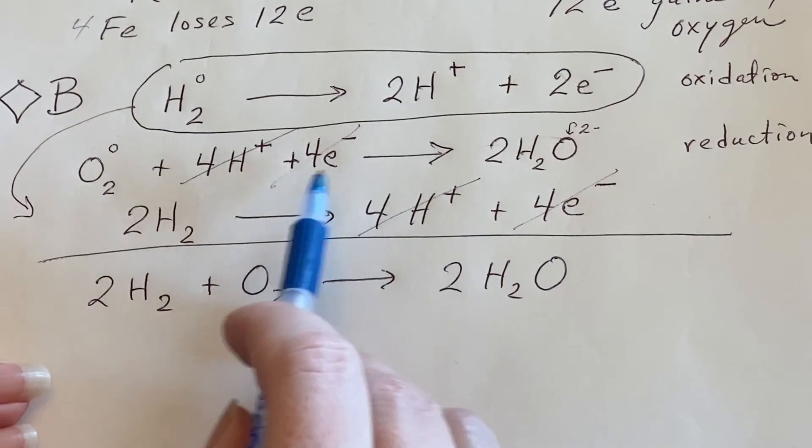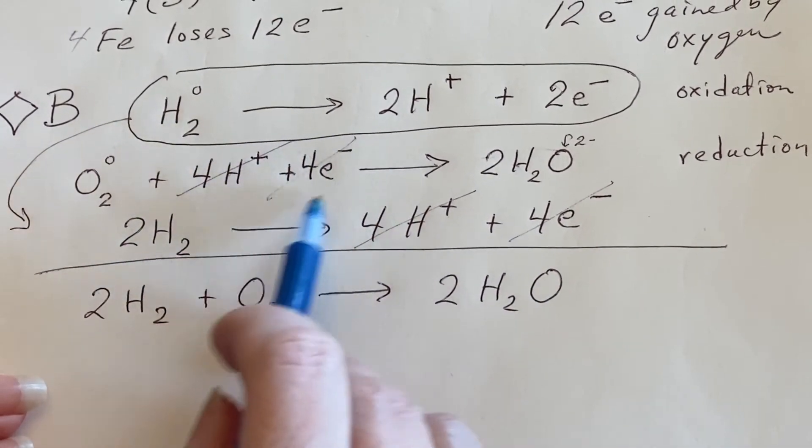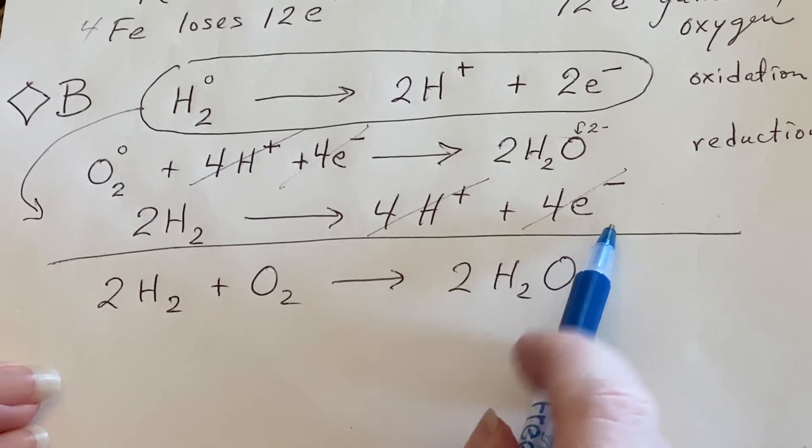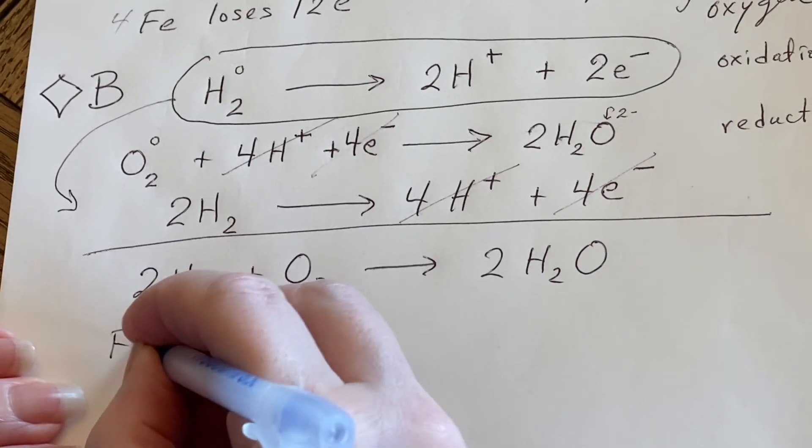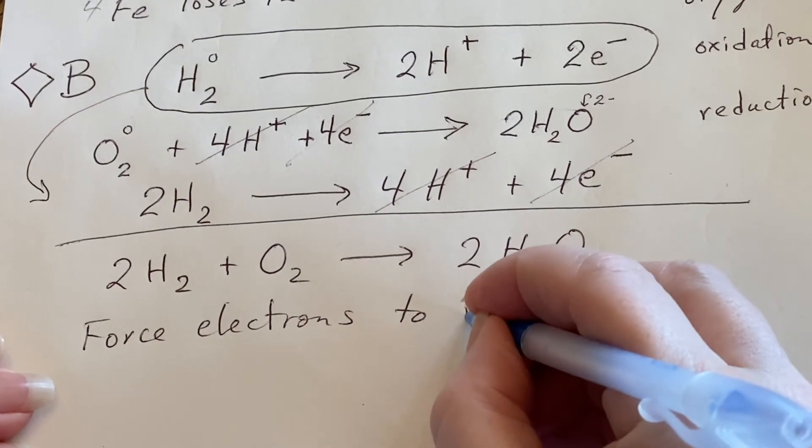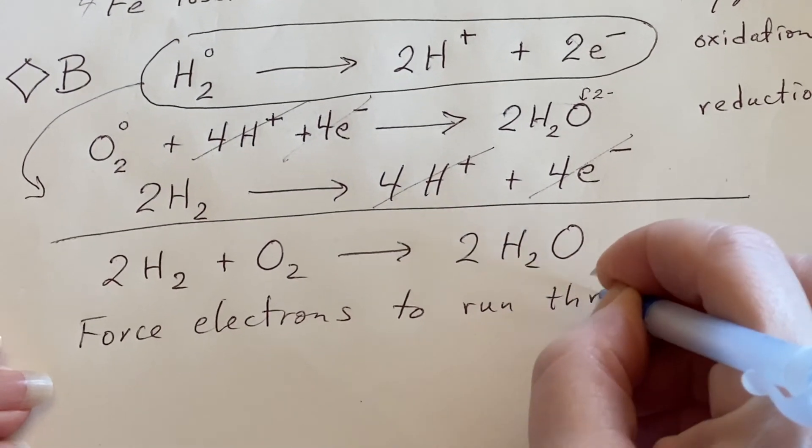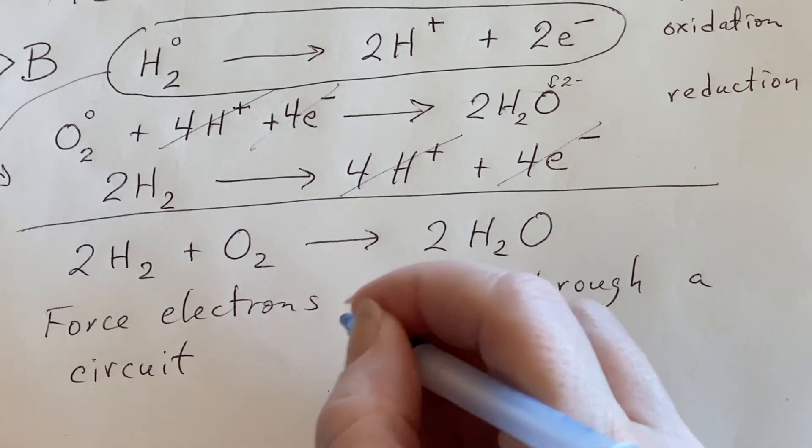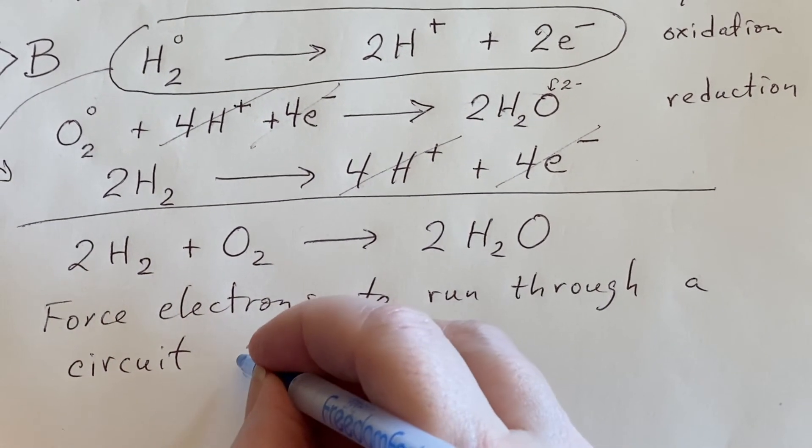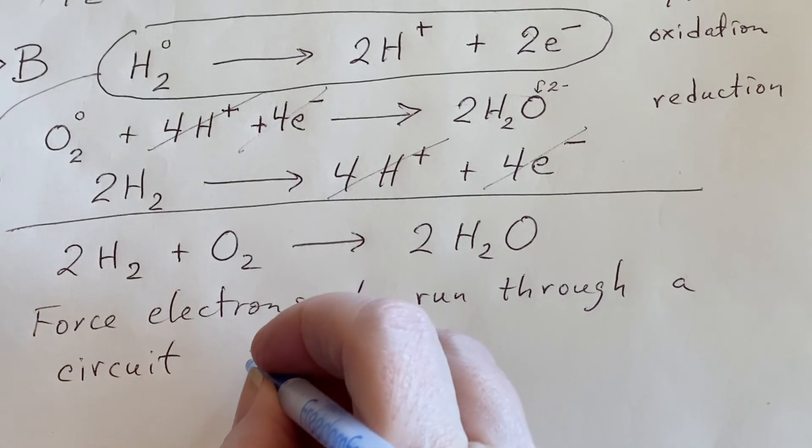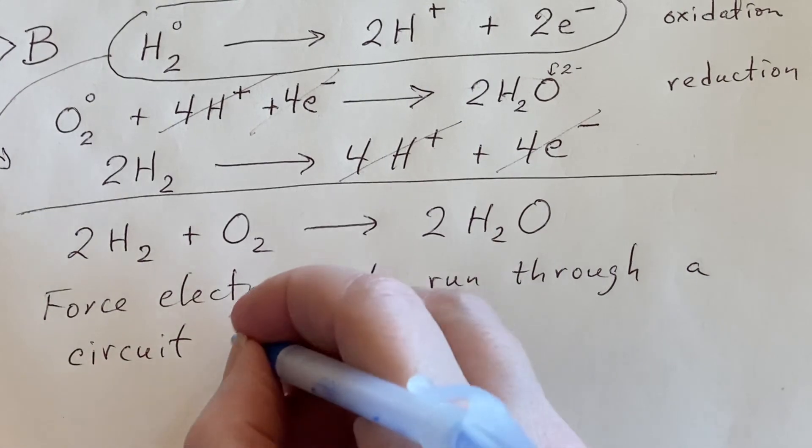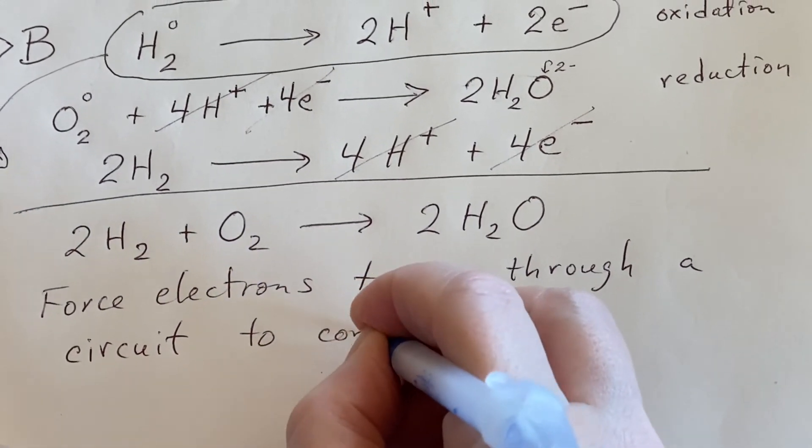There was definitely a situation where at some point these were free and they were moving. So if we can just force these electrons to run through a circuit before they can complete their task, then we can say that we have managed to generate electricity. They have to run through a circuit in order to complete the reaction.